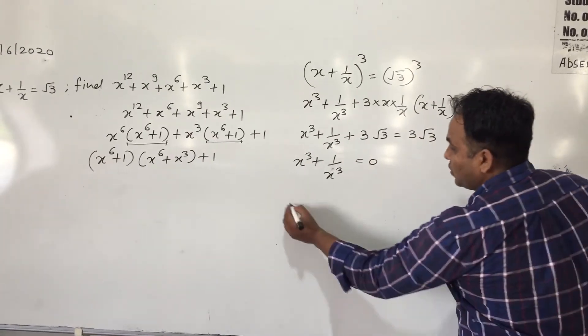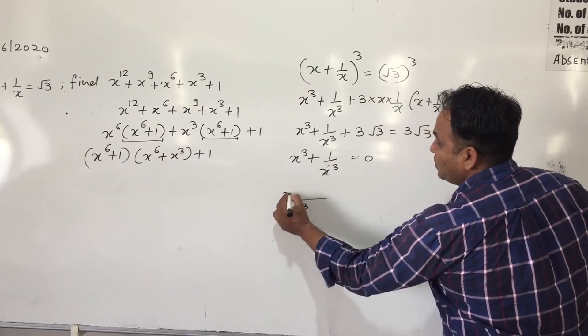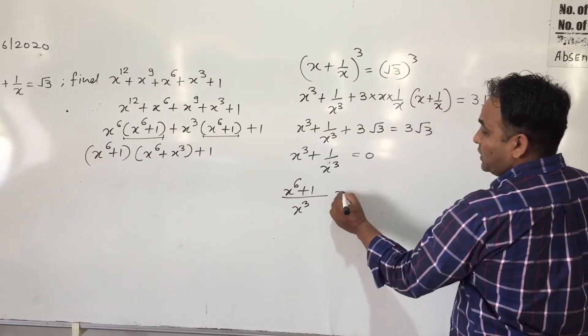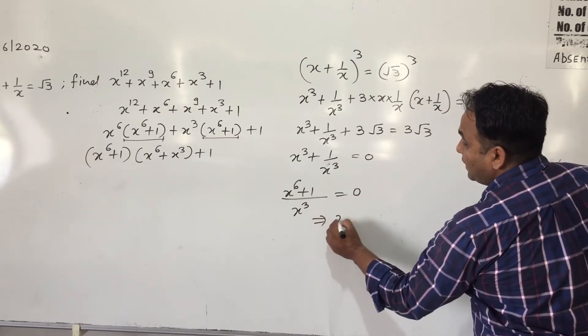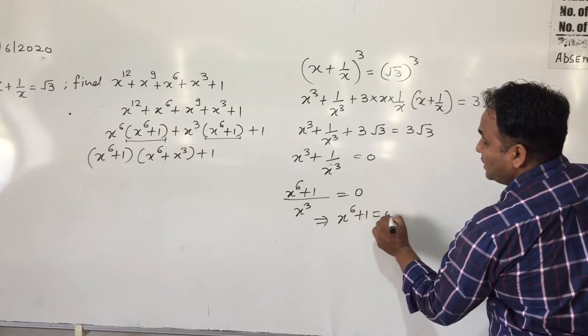Taking the LCM, we will get x^3, x^6 + 1 equals to 0. From here, we get x^6 + 1 equals to 0.